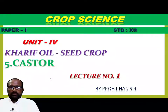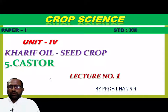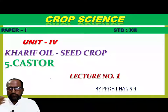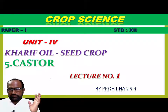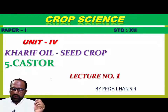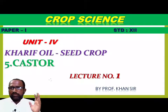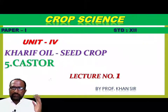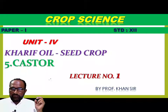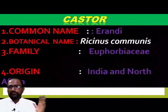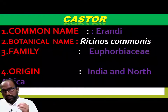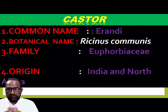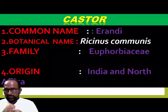Welcome to Khan's Crop Academy. Good morning students. Today we are going to learn Crop Science Standard 12, Paper First, Unit Number Four: Kharip Oil Seed Crop - cultivation of Kharip oil seed crop, that is castor. We will study cultivation practices of the castor crop - how it is cultivated and what practices are followed for this oil seed crop in Paper First.